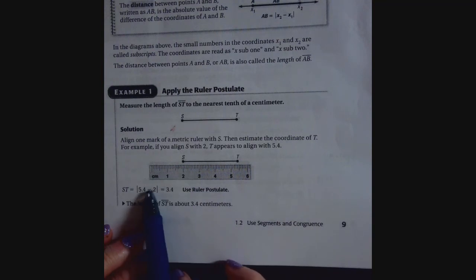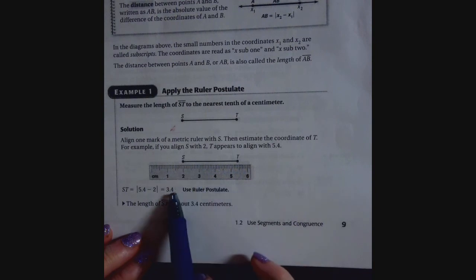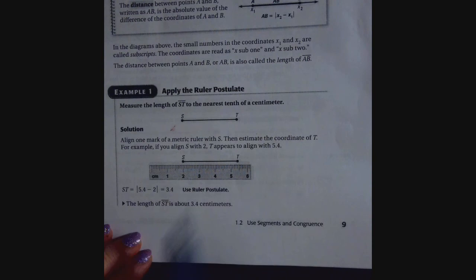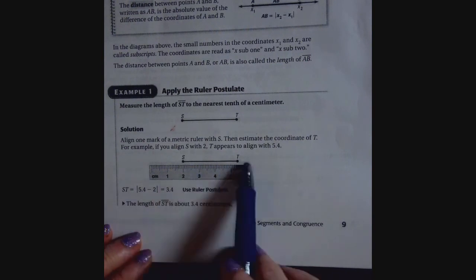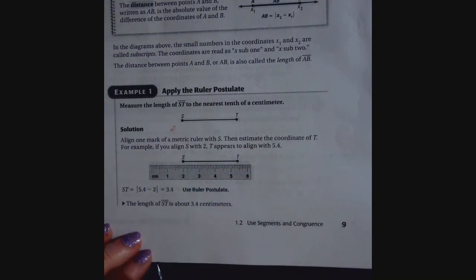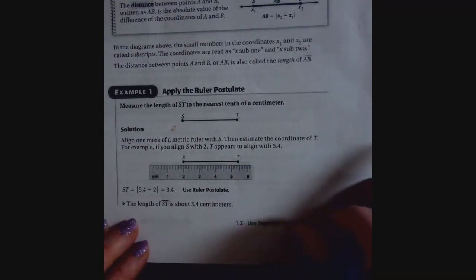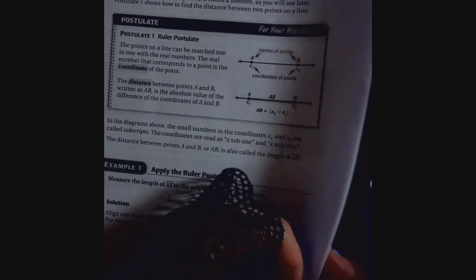So if you take 5.4 minus 2, the distance is 3.4. That's another way to do it, rather than having to count from here to here. You take the distance of here minus the distance of here, and then you're going to get the same thing. And it's about 3.4 centimeters. So fairly straightforward, but that's what they call the ruler postulate.